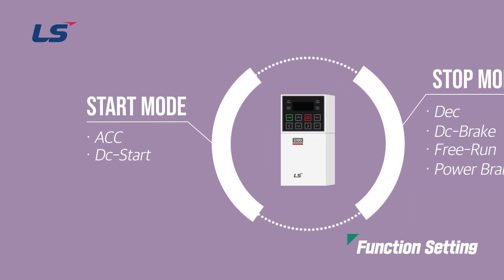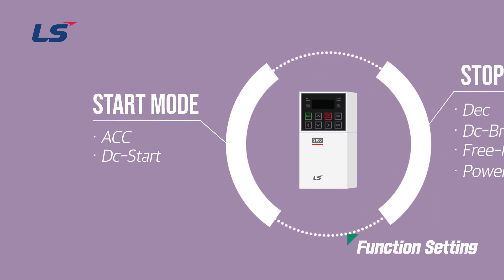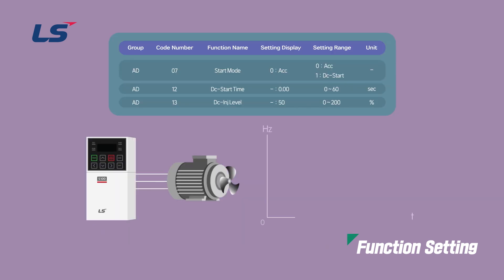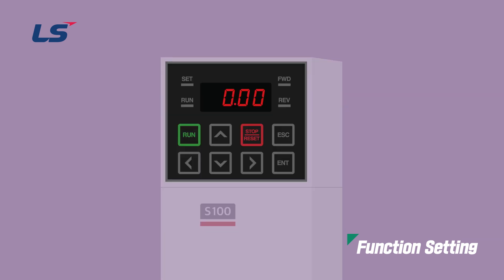Let's see how to set the start method. The ACC acceleration start method is a general acceleration method. If no other function is selected, the AC drive will accelerate to the target frequency by reflecting the acceleration time when the operation command is input. Set by selecting 0 ACC in start mode AD7.